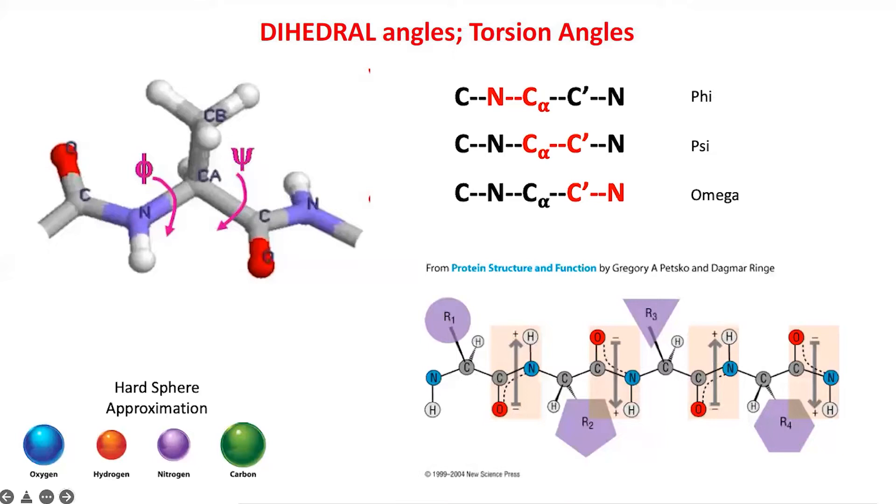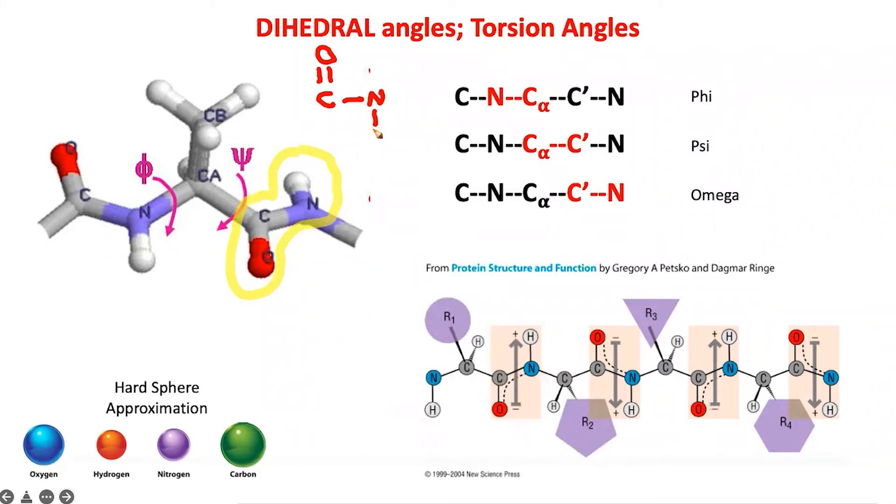Why was omega fixed as 180 degrees? This particular combination of atoms is basically partial double bond in character. Because of this partial double bond, the electrons freely roam between these four atoms, making it very rigid. This partial double bond doesn't allow rotation around the C-N bond.